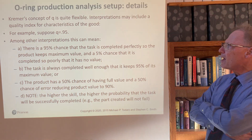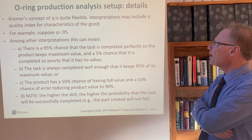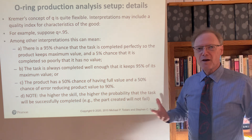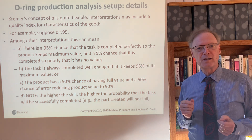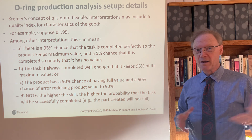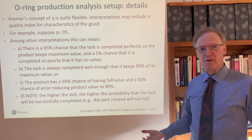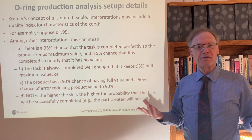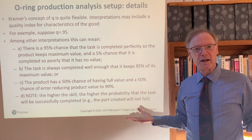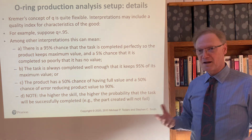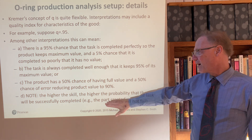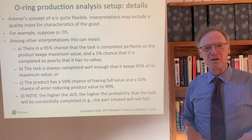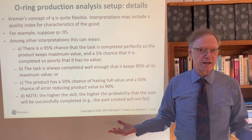The concept of Q — the quality of input — is very flexible. It can be a quality index of characteristics. For example, 0.95 could mean there's a 95% chance that the task is completed perfectly — so 95% of the maximum total value, but 5% of the time there will be no value at all. Or it could always be completed to 95% of its value. Or there could be a 50% chance of 100% value and a 50% chance of 90% value, giving an expected value of 95%. The higher the skill, the higher the probability that a task will be successfully completed.